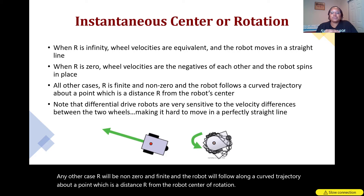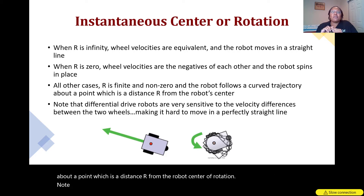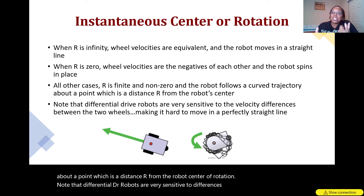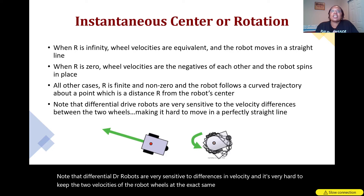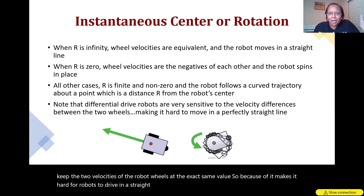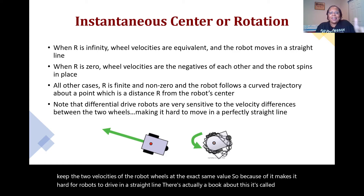Note that differential drive robots are very sensitive to differences in velocity, and it's very hard to keep the two wheel velocities at the exact same value. Because of this, it makes it hard for robots to drive in a straight line — there's actually a book about this called 'Real Robots Don't Drive Straight.'